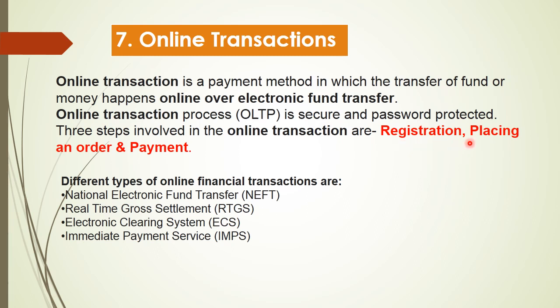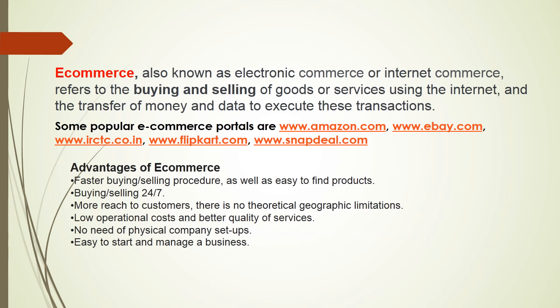Payment is done by using credit card, debit card, net banking, or other options. The different types of online financial transactions are NEFT — National Electronic Fund Transfer, RTGS — Real-Time Gross Settlement, ECS — Electronic Clearing System, and IMPS — Immediate Payment Service.